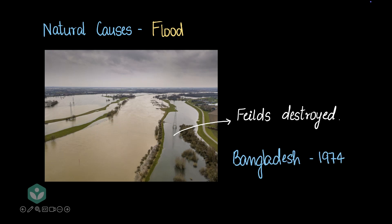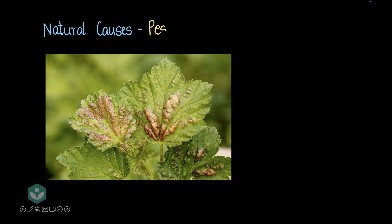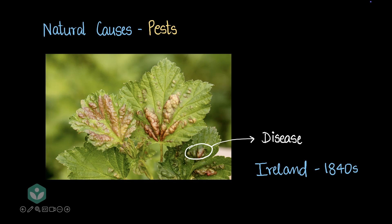The next natural cause is pests. Diseases can spread throughout a region in a particular plant and cause the entire crop for the entire region to be destroyed. An example is the Ireland famine in the 1840s, where the potato crop got affected for a few years in succession and there was no food for people to eat.